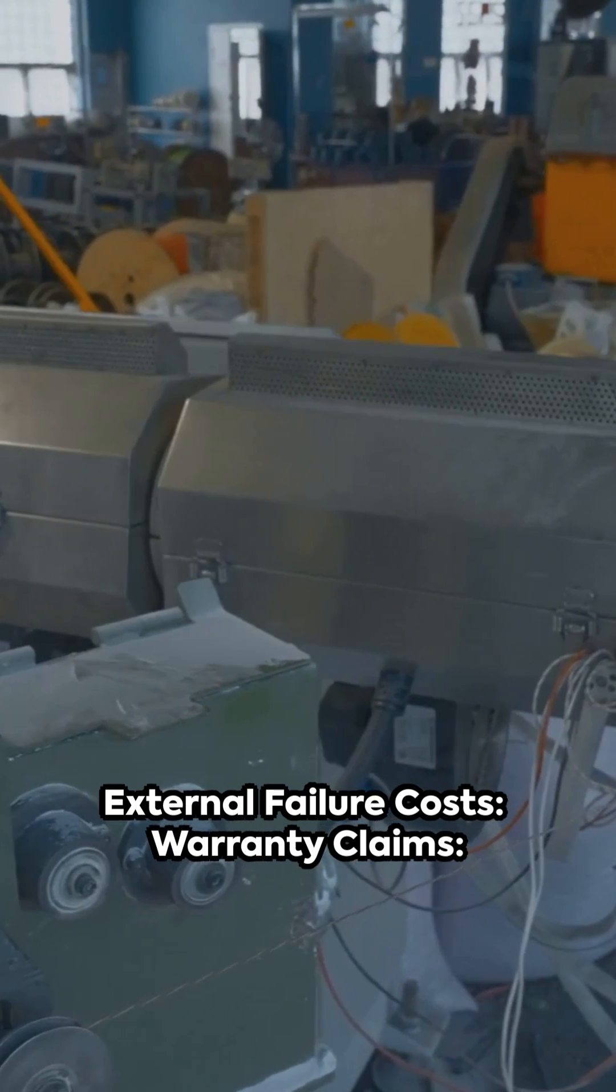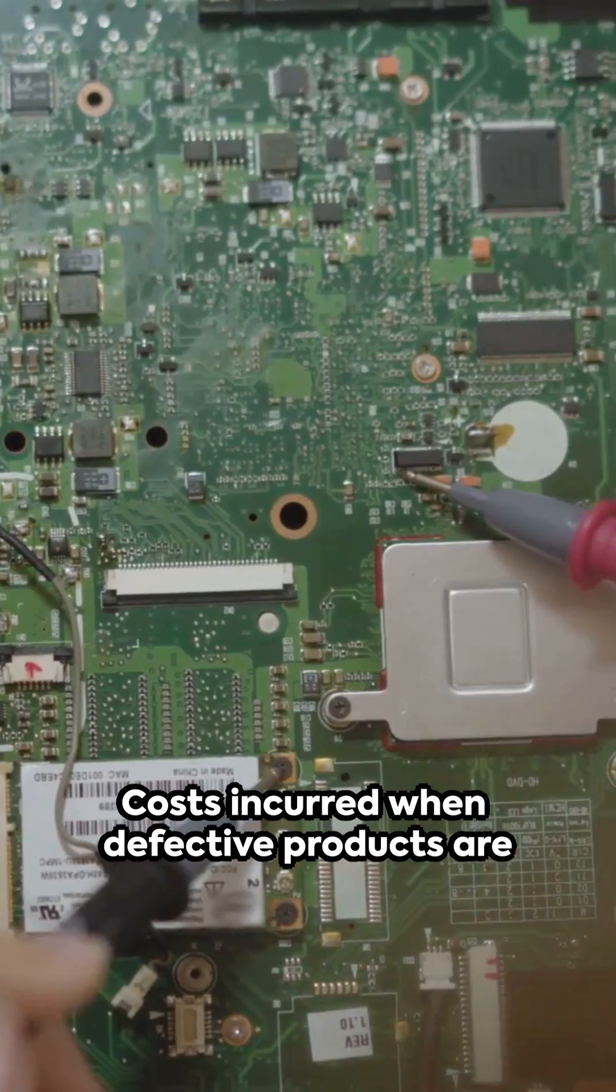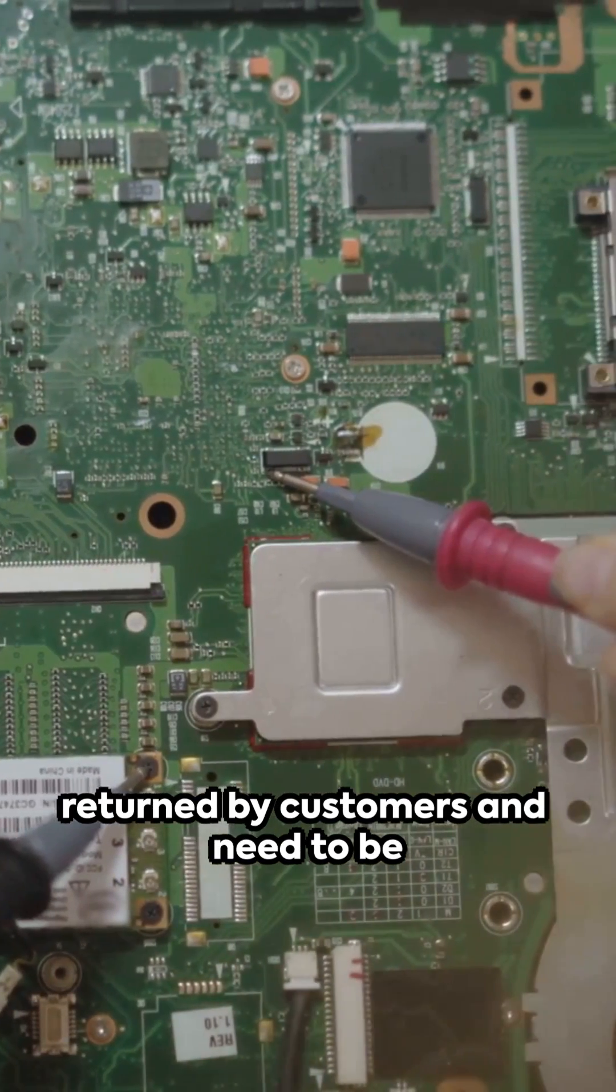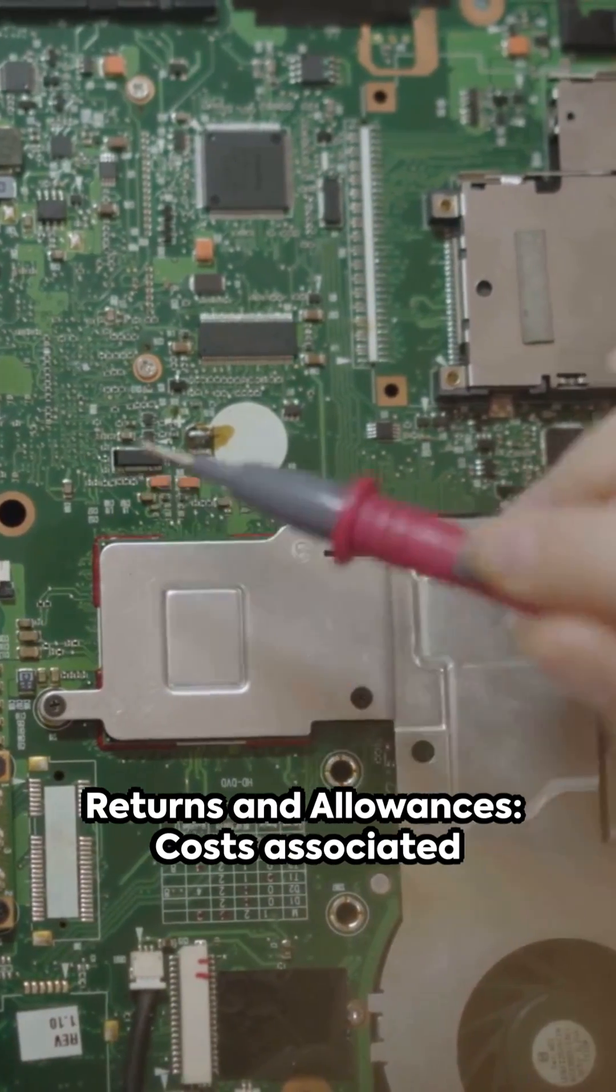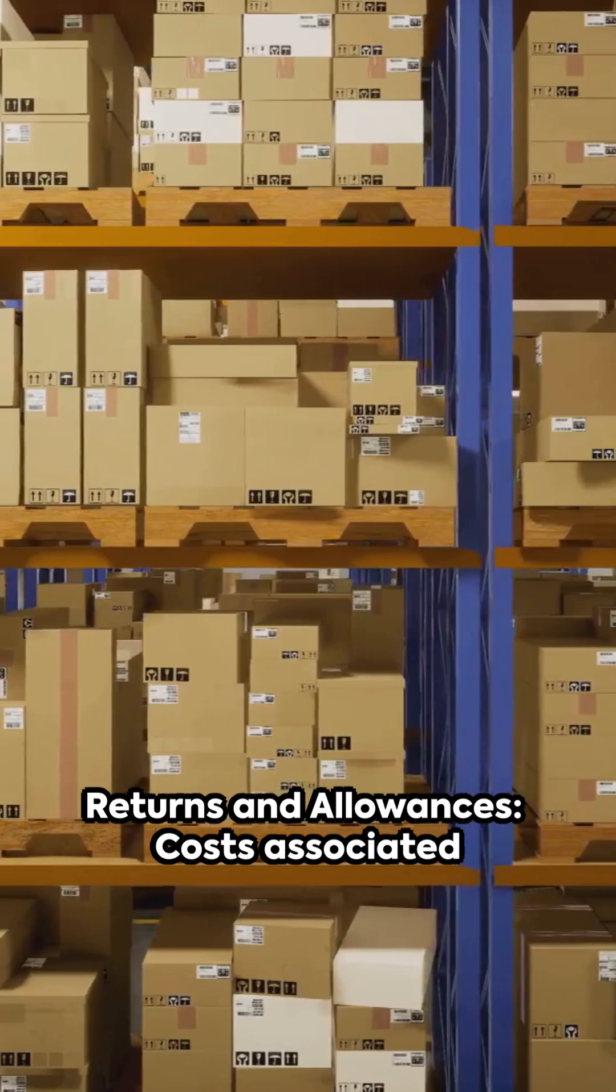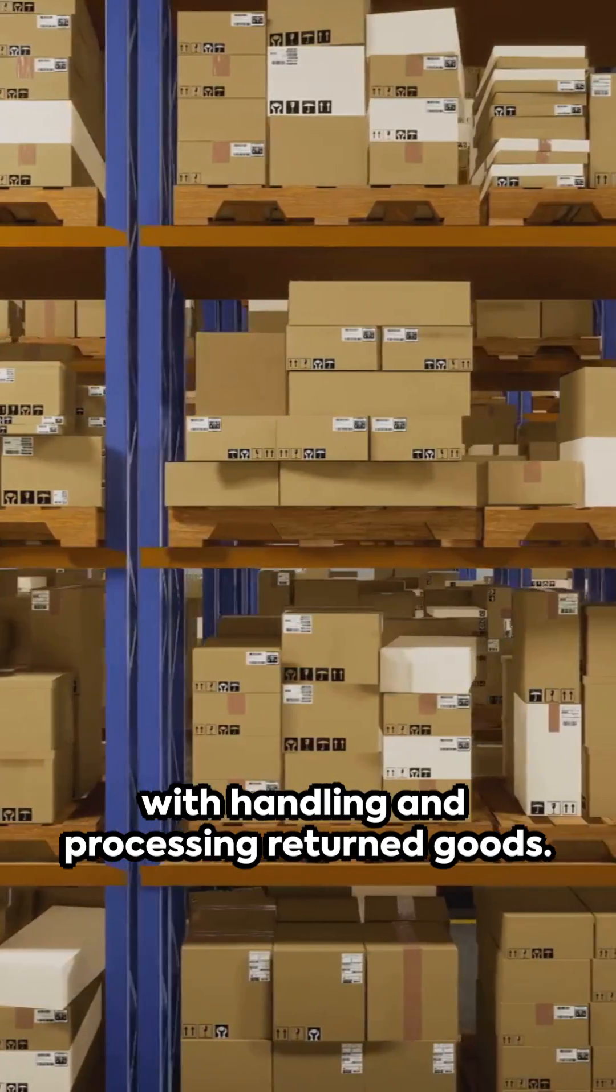External failure costs: Warranty claims - costs incurred when defective products are returned by customers and need to be replaced or repaired. Returns and allowances - costs associated with handling and processing returned goods.